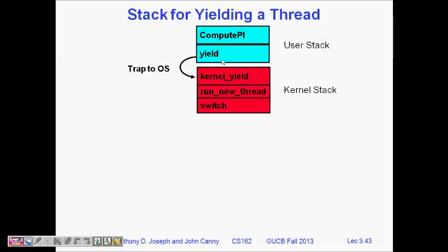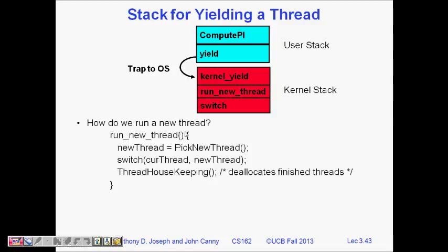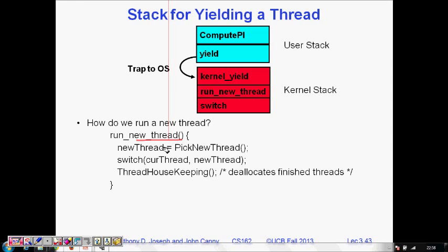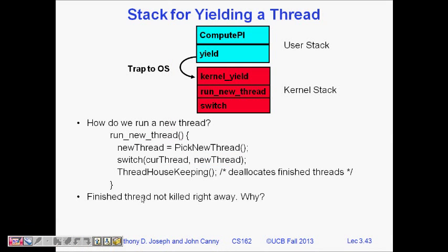What happens to the stack of a yielding thread? The user stack of 'compute pi' is active, then a trap to the OS occurs — a kernel yield happens. When the function calls kernel yield, the kernel code runs, the OS gets the trap, it starts a new thread, and a context switch happens. 'Run new thread' is called: it picks a new thread from the ready queue, then 'switch current thread to new thread' saves the thread control block of the present thread and loads the new thread. Some thread housekeeping is also performed.